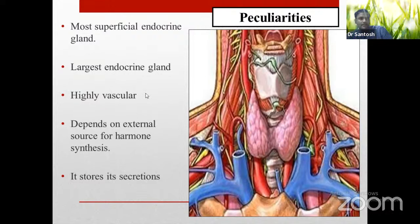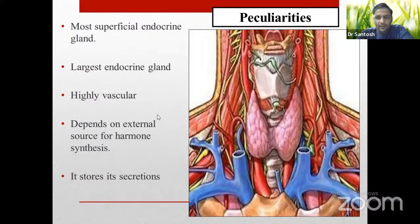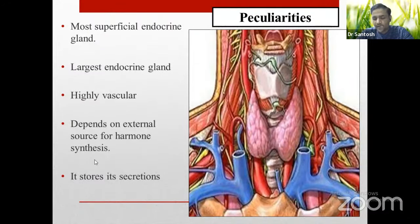The thyroid gland depends on an external source for hormone synthesis — namely iodide — making it the only gland with this characteristic. It is also the only endocrine gland that stores its secretions, in the form of colloid. In histology, thyroid follicles contain colloid and are lined by epithelium. You can see the colloid in the follicles in the histological images, which we will discuss further.